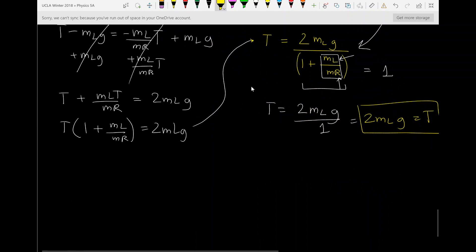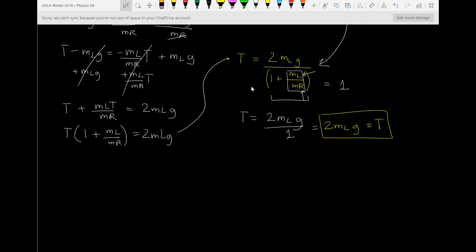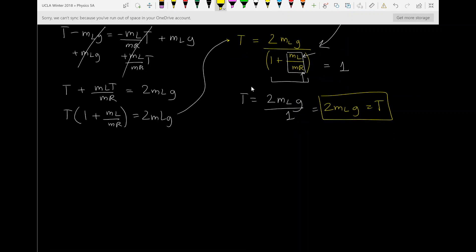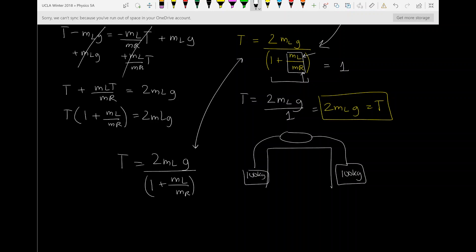And just for the hell of it, let's do an example. Let's do an example where the two forces are equal to each other, and we'll see what we get. Okay, so here's our original equation, or our correct equation. I'm going to rewrite that over here. T equals 2 MLG over 1 plus ML over MR. And in the case of, let me just really quickly do a sketch. This is 100 kilograms, this is 100 kilograms, we have some spring here, and this is also 100 kilograms.